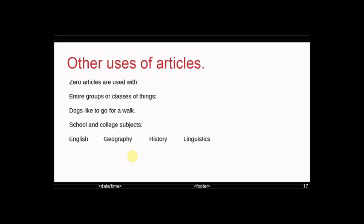Other uses of articles. Zero article can also be used with entire groups or classes of things. Dogs like to go for a walk. Sharks live for 20 to 30 years. Also, the zero articles are used with school and college subjects. So you study English, I study geography, we study history, I study linguistics. No article with any of these. Zero articles are also used with meals and ways of travelling. So I eat lunch. Did you have breakfast? Would you like dinner? No article. I travel by bus, I own a car, a car if it's with own. But for travelling, no. I travel by boat, I travel by bus, I travel by car, I travel by boat. With travelling, there's no article.